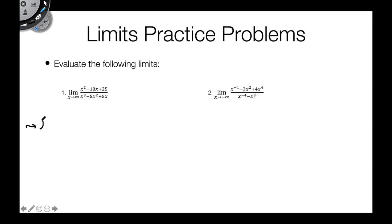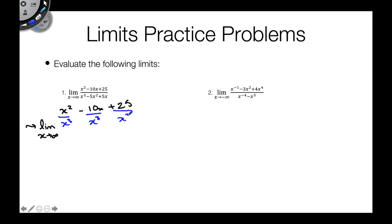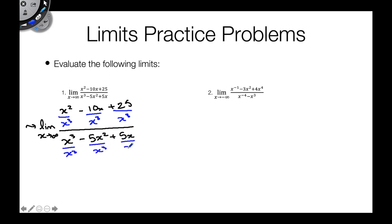We'll have the limit as x approaches infinity of x squared minus 10x plus 25, with each of those terms divided by x cubed. And we do exactly the same thing in the denominator: x cubed minus 5x squared plus 5x, each divided by x cubed.